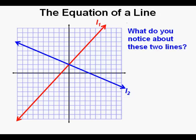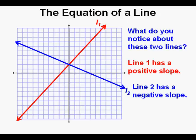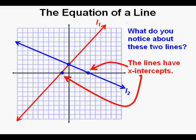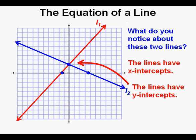We have two lines labeled L1 and L2. What do you notice about these lines? L1 has a positive slope or rate of change. Line 2 has a negative slope because it goes down from left to right. We notice that the two lines intersect here. Later in the course, we're going to discuss how to find this intersection point in different ways. Both of these lines have x-intercepts and y-intercepts.